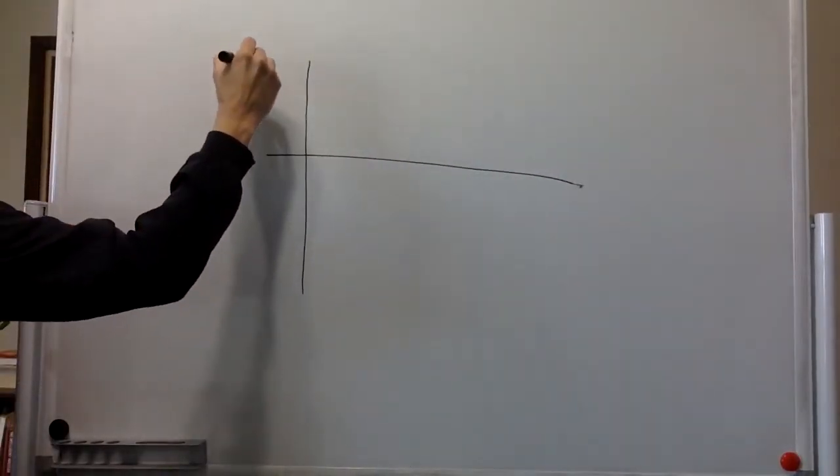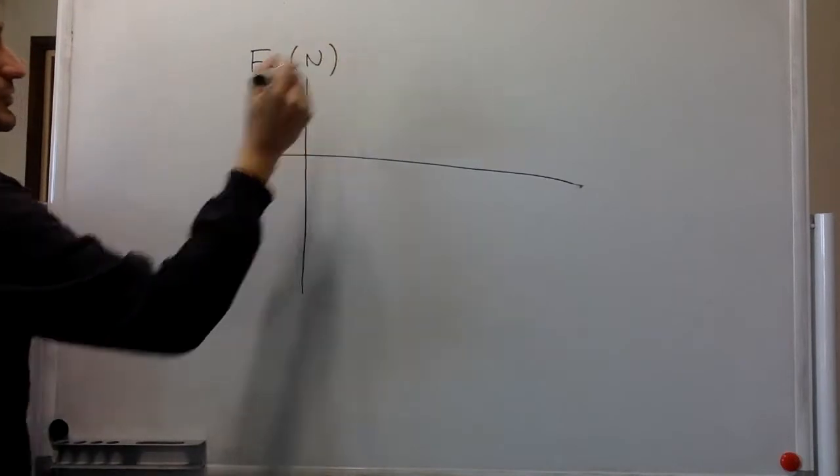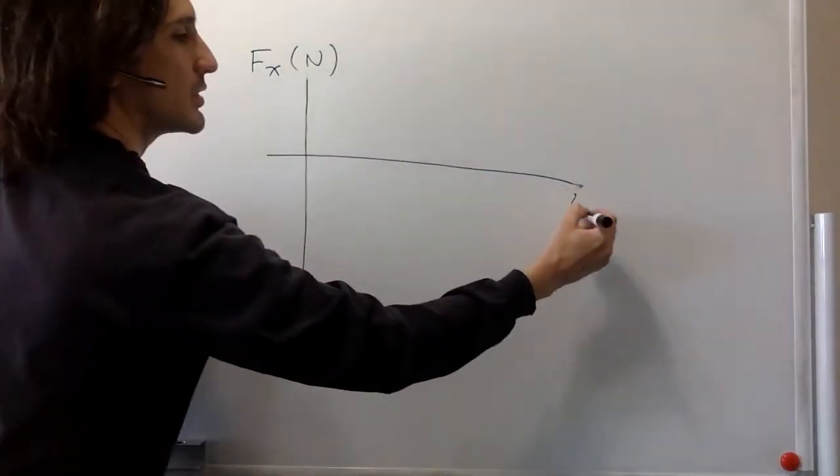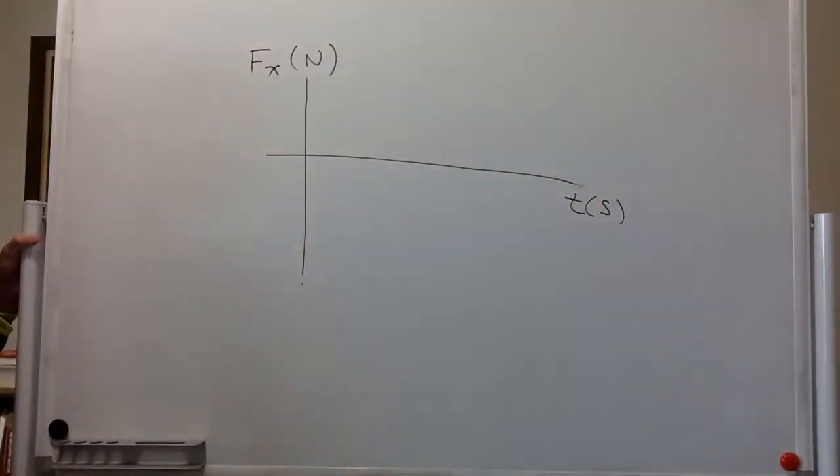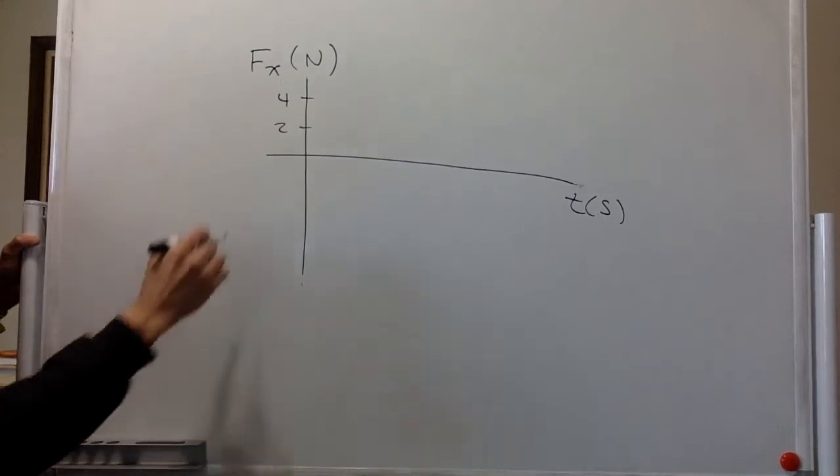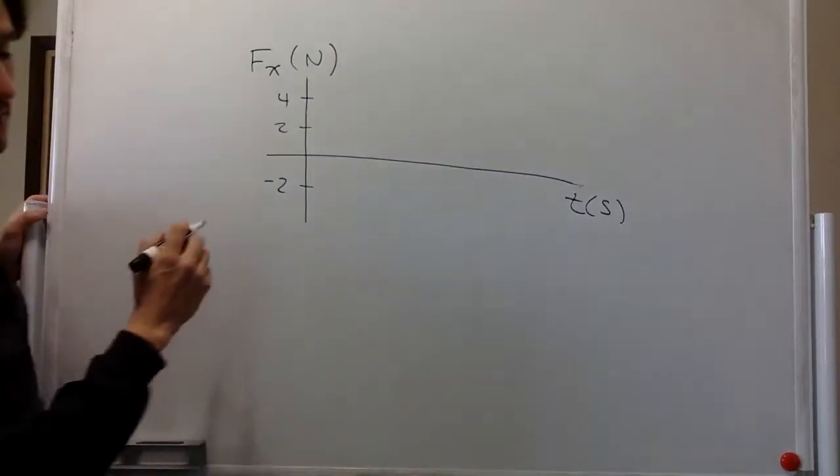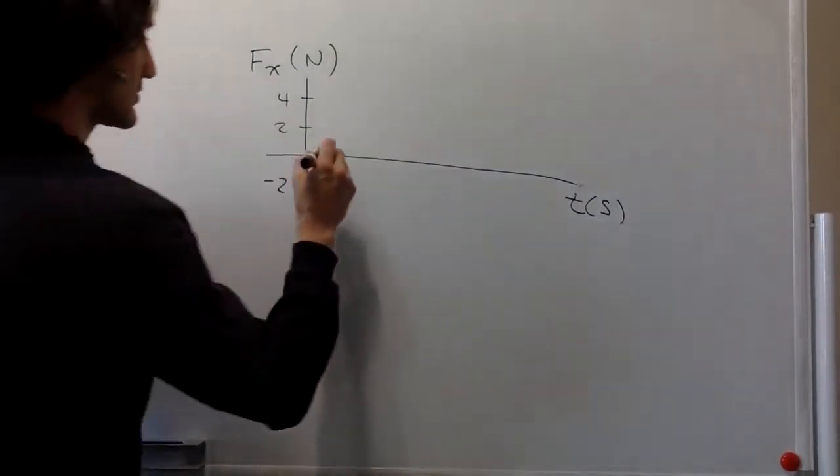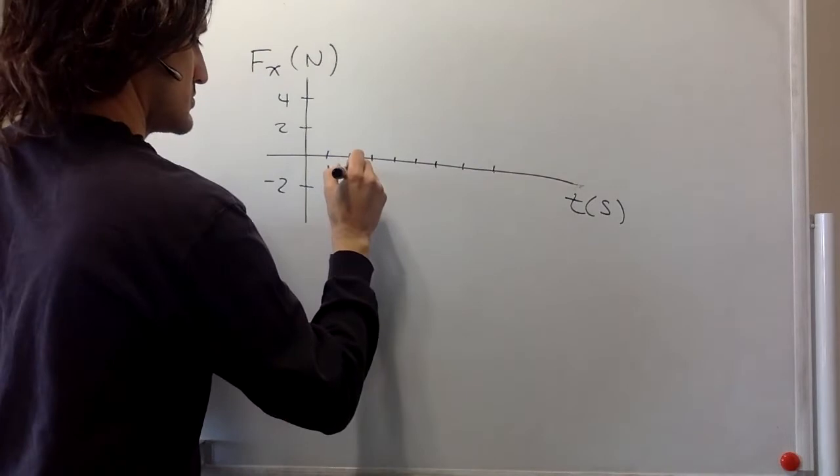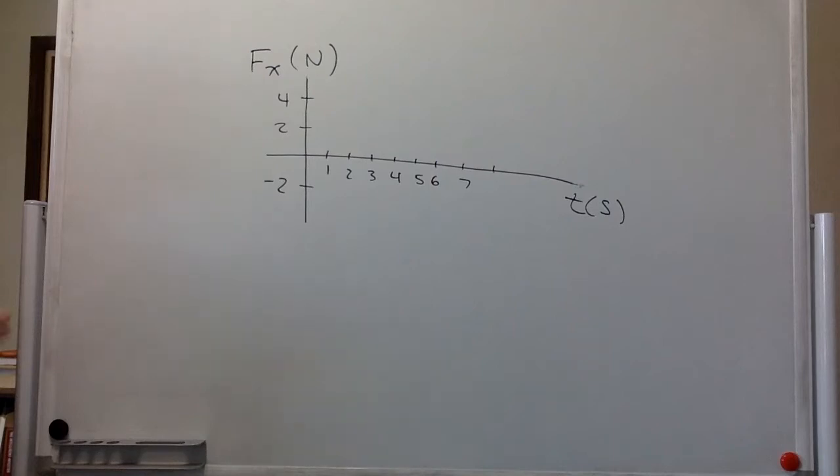We have the x component of some force, given in newtons, on the vertical axis. And then on the horizontal axis, we have the time in seconds: 2, 4, and negative 2. And then the time looks like that.